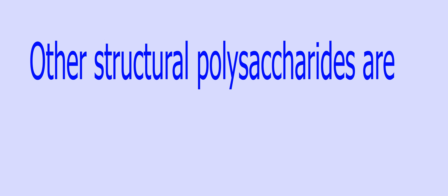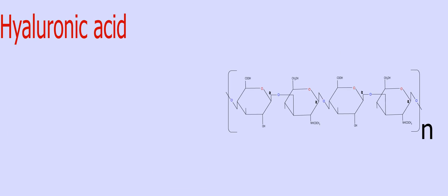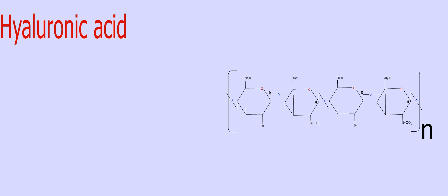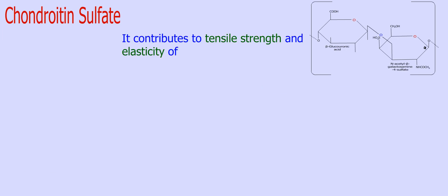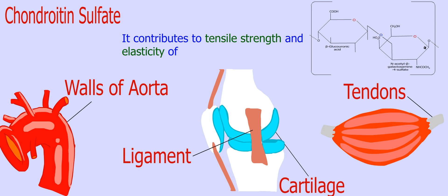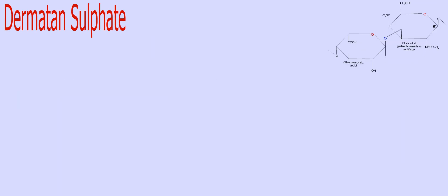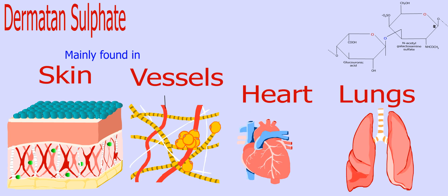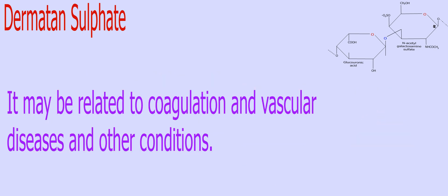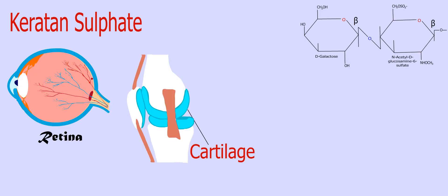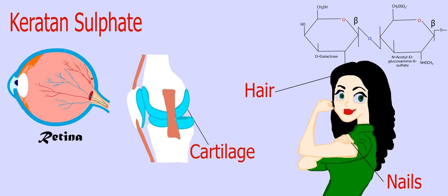Other structural heteropolysaccharides include hyaluronic acid, which acts as a lubricant in the synovial fluid of joints. Chondroitin sulfate contributes to tensile strength and elasticity of cartilages, tendons, ligaments, and walls of the aorta. Dermatan sulfate is found mainly in the skin, and also in vessels, heart, and lungs — it may be related to coagulation and vascular diseases. Keratan sulfate is present in the cornea, cartilage, bone, and a variety of other structures such as nails and hair.